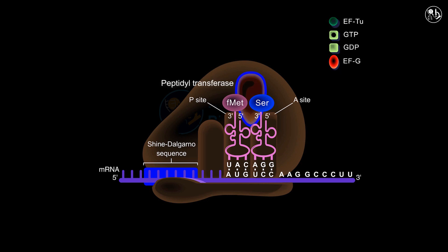Peptidyl transferase, which is found in the large subunit of the ribosome, catalyzes this reaction. The initial step is the breaking of the bond between fMet and its associated tRNA in the P site. Subsequently, a peptide bond is established between the liberated fMet and the serine, which remains attached to its tRNA in the A site. The formation of a peptide bond is a condensation reaction, which results in the liberation of water.